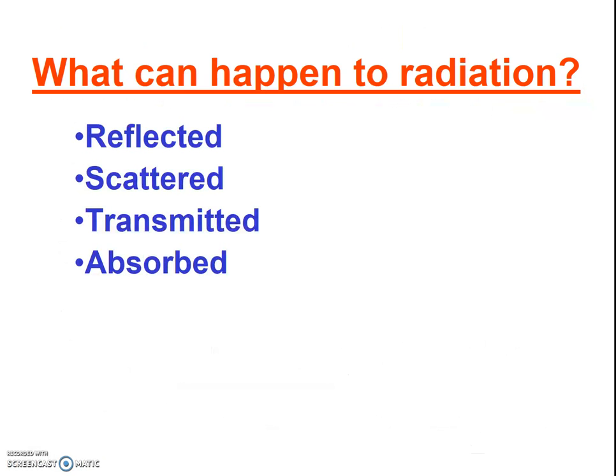So what can happen to all that radiation? There are four things that can happen to any type of radiation. It can be reflected. When this occurs, the wavelength doesn't change. So when sunlight — shortwave radiation like visible light — hits a mirror, or snow, or ice, it's simply reflected back as shortwave radiation. This is why you can get a nasty sunburn when swimming or skiing: you're getting the shortwave radiation from the Sun, and then you're getting it again as it's reflected back off the ice, snow, or water.